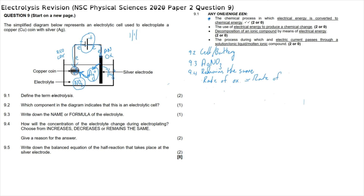Question 9.5: write down the balanced equation for the half-reaction that takes place at the silver electrode. Using the table of standard reduction potentials, the half-reaction shows that silver breaks apart to form silver ions and one electron: Ag → Ag⁺ + e⁻.